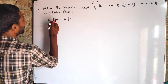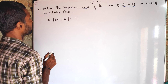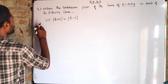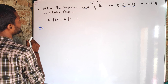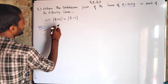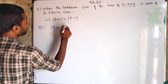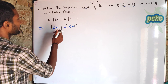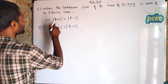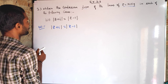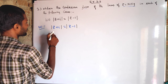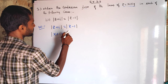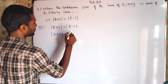The third problem: modulus of z plus iota equals modulus of z minus iota. We need to find the Cartesian form of the locus. Given: |z + i| = |z - i|. We substitute z = x + iy, so we get modulus of x plus iota y plus iota.